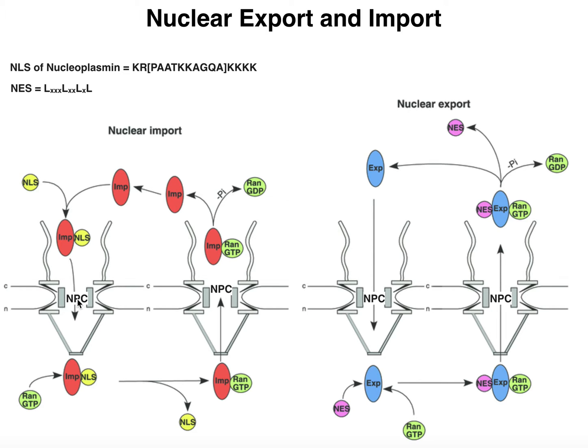The nuclear pore complex, or NPC, is vital in the regulation of the movement of things in and out of the nucleus. Not every molecule or every protein needs to be able to go into the nucleus. Only certain molecules need to be imported into the nucleus, such as DNA polymerases, RNA polymerases, transcription factors, and so on. Cytosolic enzymes and so forth wouldn't need to go into the nucleus.